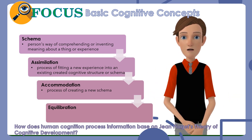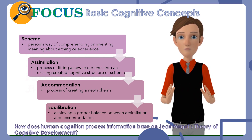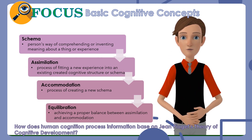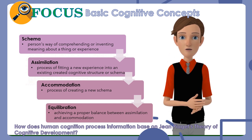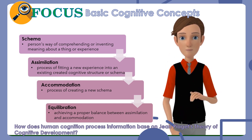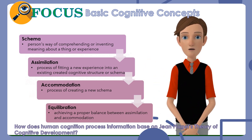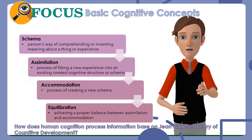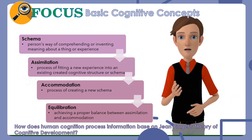Equilibration: Piaget believed that people have the natural need to understand how the world works and to find order, structure, and predictability in their lives. Equilibration is achieving a proper balance between assimilation and accommodation. When our experiences do not match our schema and cognitive structures, we experience cognitive disequilibrium — a discrepancy between what is perceived and what is understood. We then exert effort through assimilation and accommodation to establish equilibrium once more.